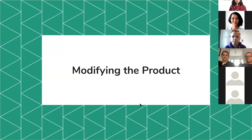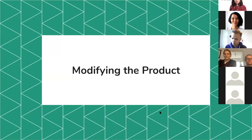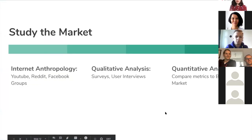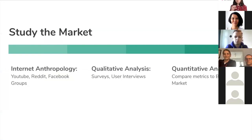That brings me to the next section: how do you modify the product? Modifying the product is a more involved process — it's more expensive because it takes more time, effort, and engineering resources. One of the most important things you can do before modifying anything is to really study the market well. At Tinder, we spend the same amount of time studying the market and figuring out if we even need to change something, and if so, what and how.